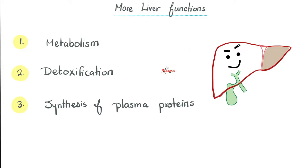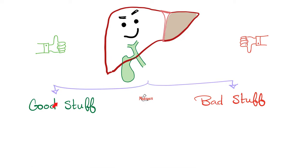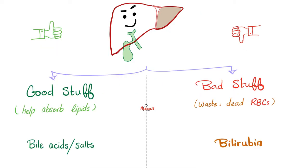The functions of your liver are numerous: metabolism, detoxification, synthesis of plasma proteins, and much more. To keep it simple, your liver makes good stuff and excretes bad stuff. The good stuff? Bile acids and bile salts — they help you emulsify and absorb lipids. The bad stuff? Bilirubin, the waste product of red blood cell destruction. Why do we call it bilirubin? Billy — because it's in the bile; rubra means red, because it comes from the destruction of red blood cells.